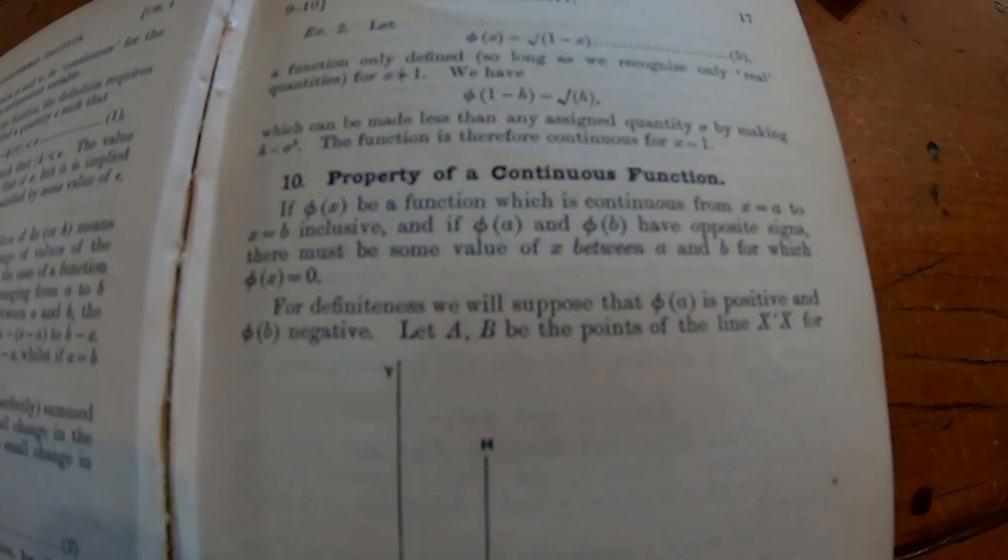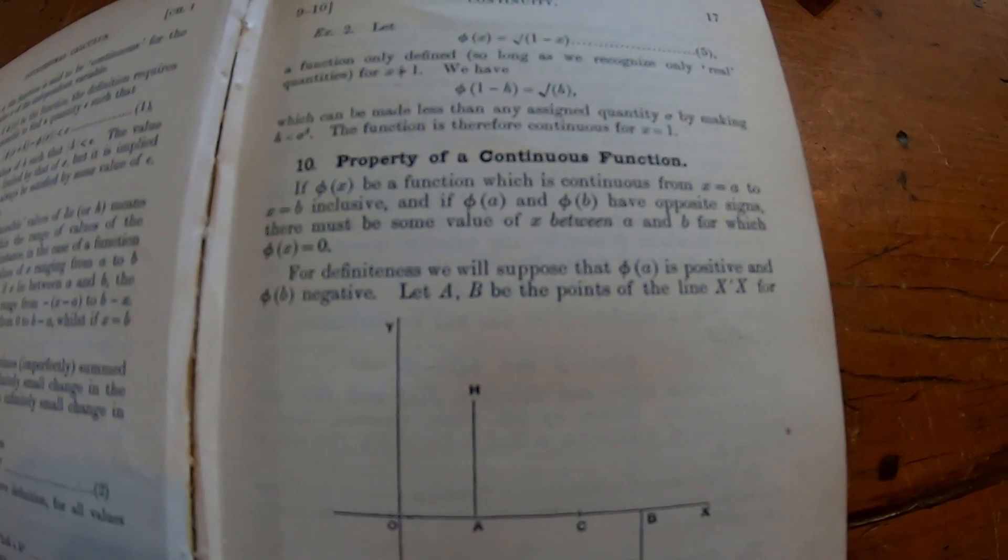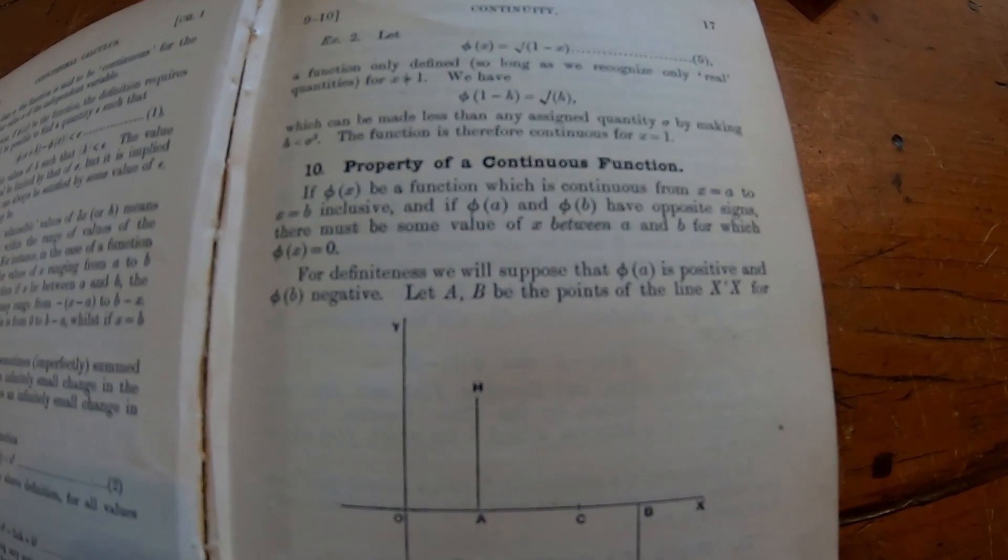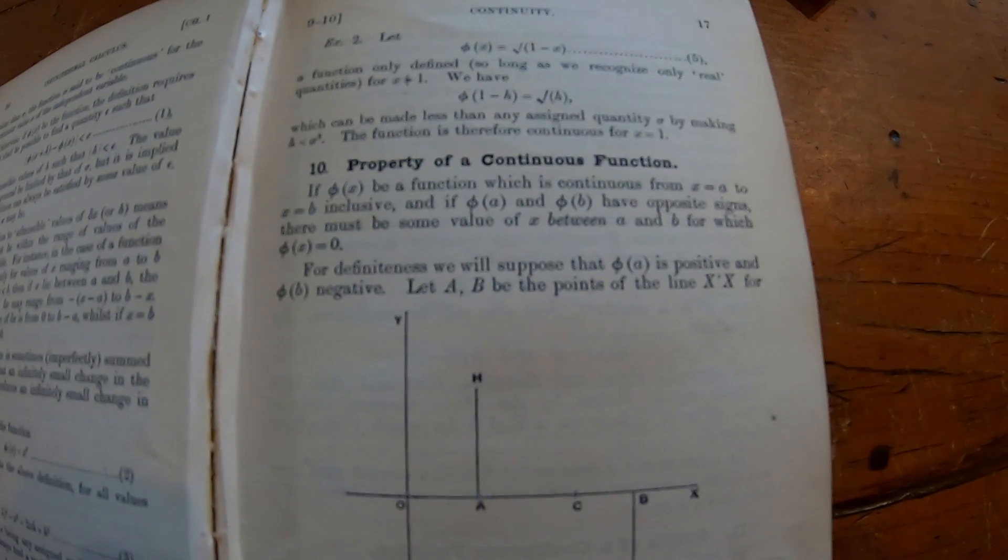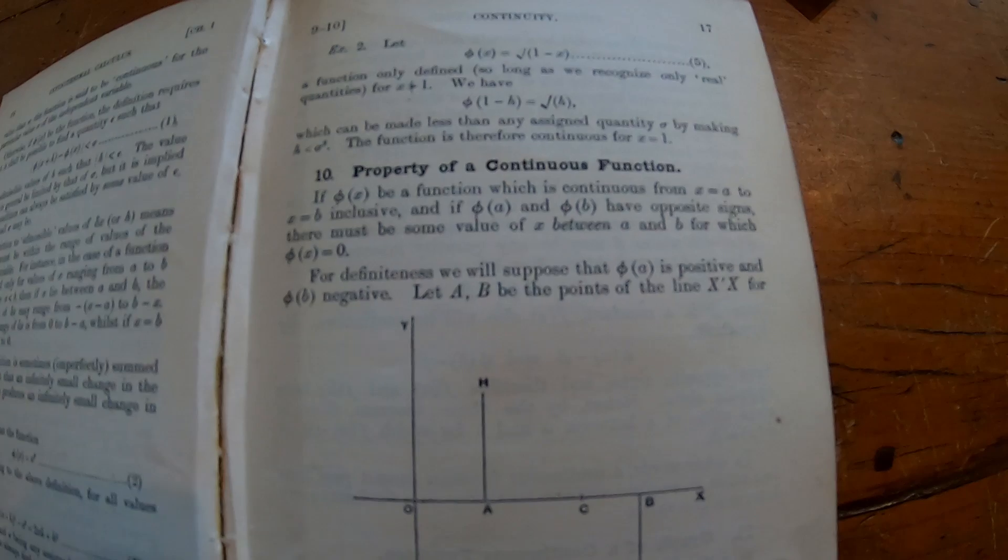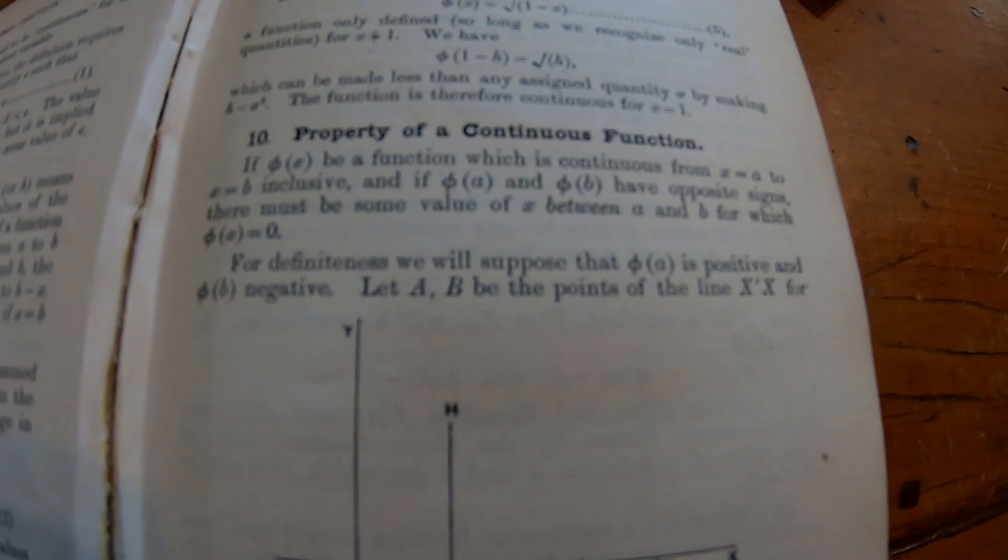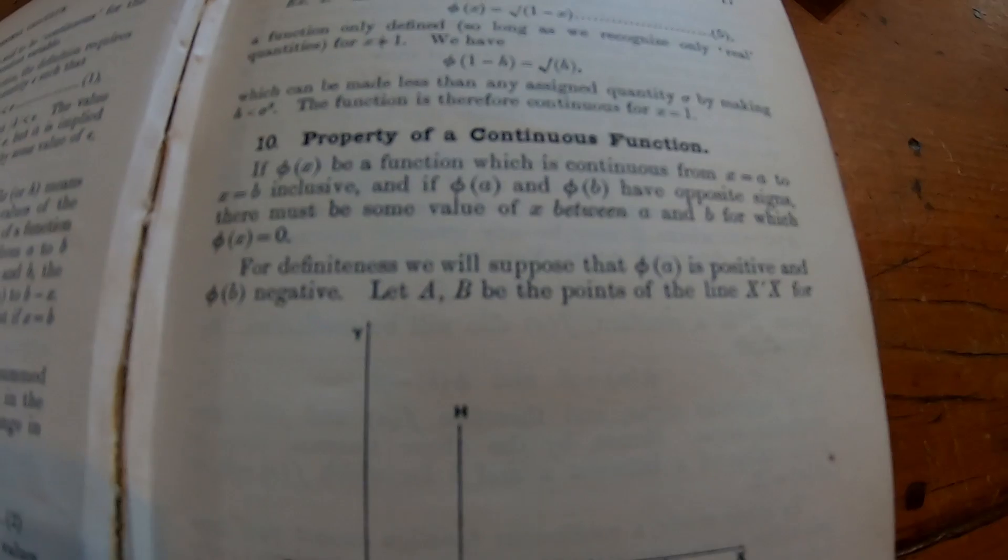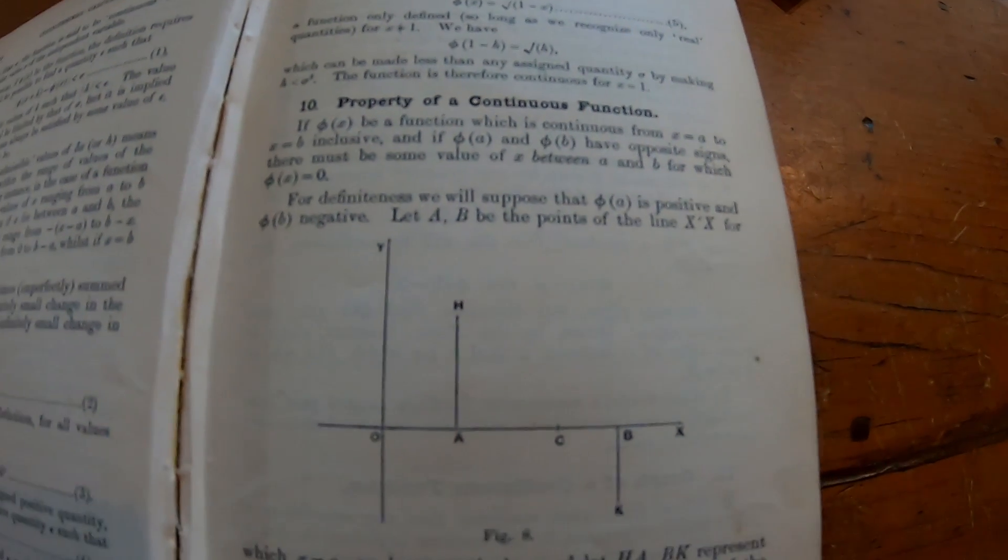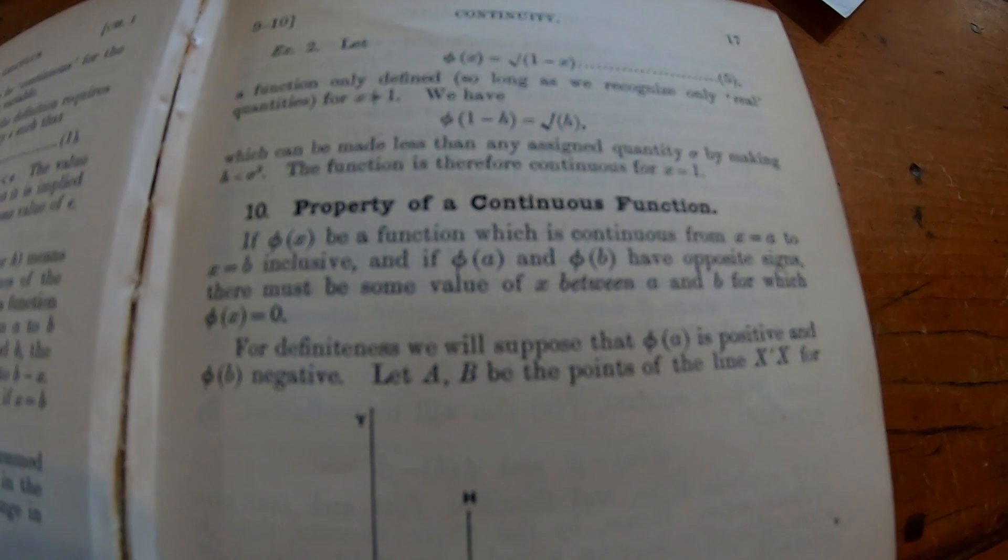This is just beautiful. Property of a continuous function. If phi of x is a function which is continuous from a to b, inclusive, and if they have opposite signs, phi of a and phi of b, there must be some value of x between a and b for which the function is zero. That's basically the intermediate value theorem. But they're calling it a property of a continuous function. And they're explaining it so well. What a beautiful book. Totally worth getting if you can actually find a copy.